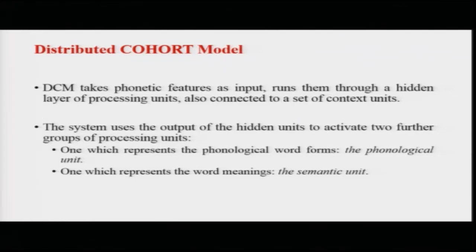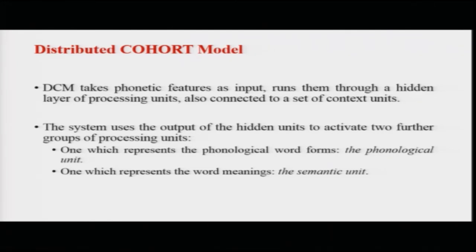The next model is the distributed cohort model - an improvement on the original cohort model incorporating new findings. This model takes phonetic features as input and runs them through a hidden layer of processing units and a set of context units. The system uses the output of the hidden units to activate two further groups of processing units: separate units for phonological word forms and separate units for meaning. This creates a differentiation between phonological processing and semantic processing - an interesting upgrade over the earlier model.